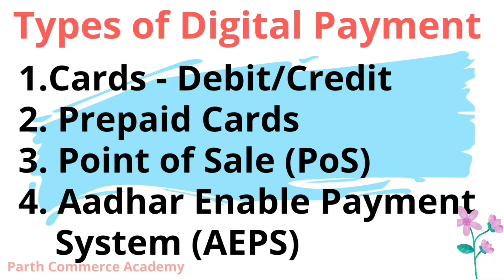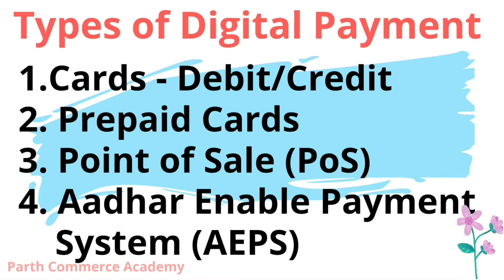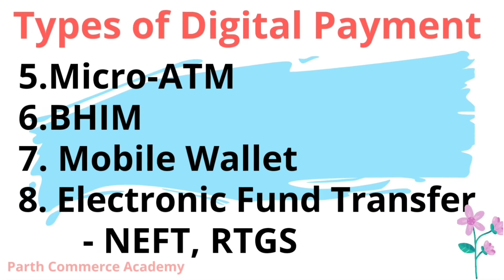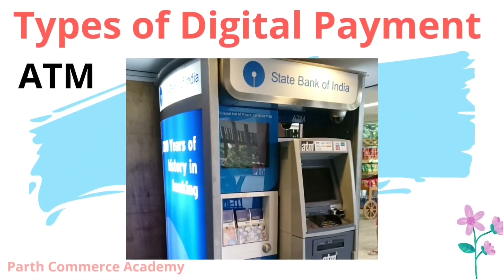Types of digital payment include: first, debit cards and credit cards, which are like plastic money. Second, we have prepaid cards — these are available not just in mobile form but also as physical cards with cash loaded. Third is point of sale terminals. Fourth is the Aadhaar card enabled payment system. Fifth is Micro ATM. Then BHIM application, mobile wallets, and lastly electronic fund transfer, which includes NEFT, RTGS, and ATM.